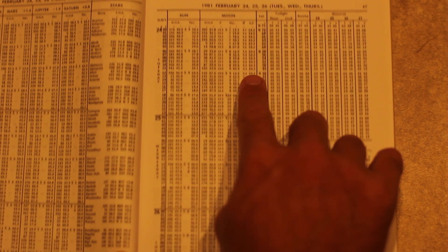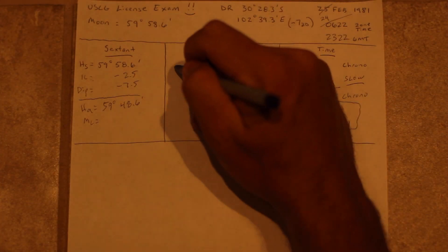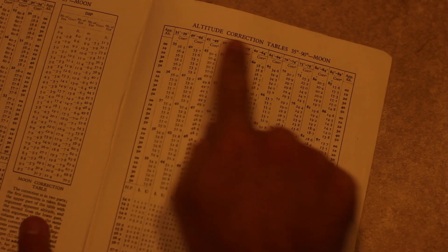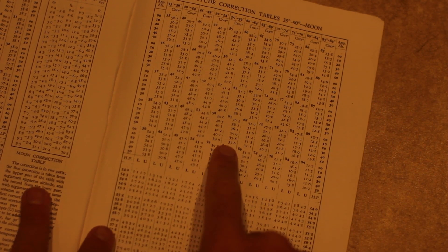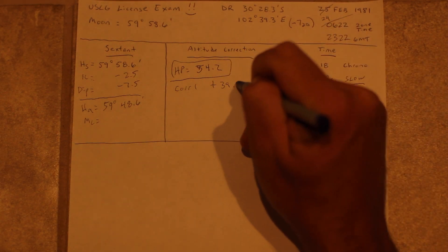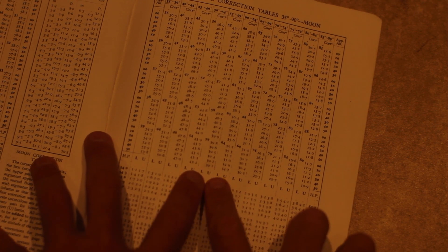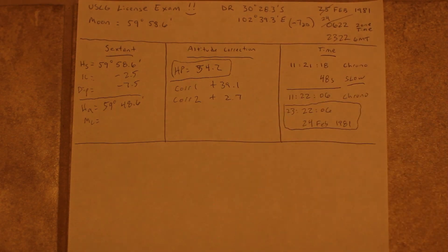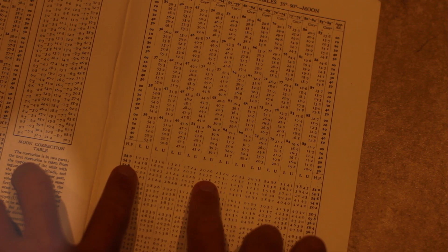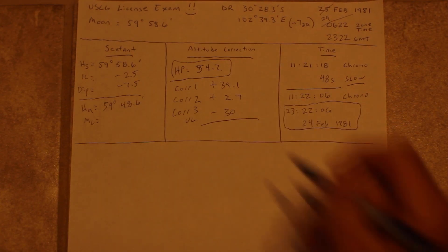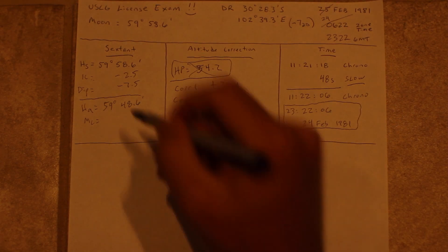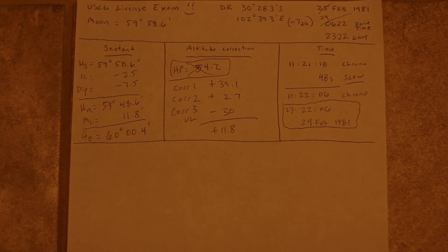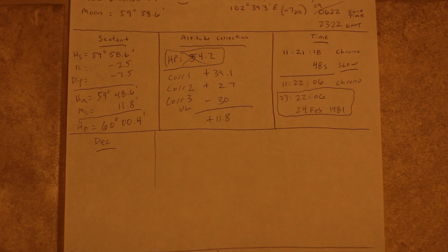We'll pull the horizontal parallax from the daily tables for the moon — this is not a correction, it's just an entering argument for a different table. In the back of the book there are altitude correction tables: one correction for the top and a second correction for the bottom. Spend some time with the tables and you'll be able to figure it out, no problem. We're also using the upper limb of the moon in this case, so we need to be sure to apply a third correction, which can be found in the description on the left side of the correction tables. Once we have our main correction for the moon, we've determined our observed altitude of 60 degrees 00.4 minutes.